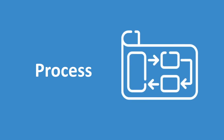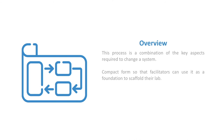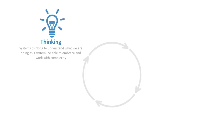The next section jumps into process. A lab is a process for doing systems innovation, and we have a series of guides that will walk you through this process — it's really the heart of what we're doing here. This process is a combination of the key aspects required to do systems change, taking a compact form so facilitators can use it as the foundation to scaffold their lab. It's composed of four main dimensions: systems thinking, systems mapping, systems change, and systems building.